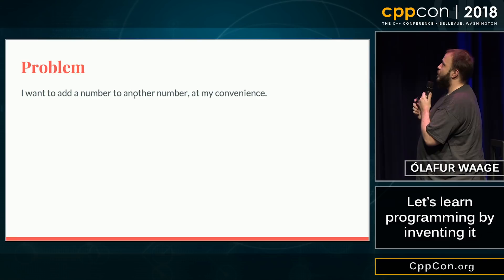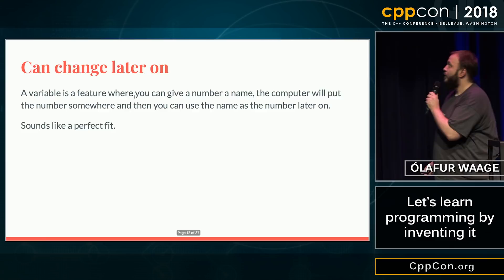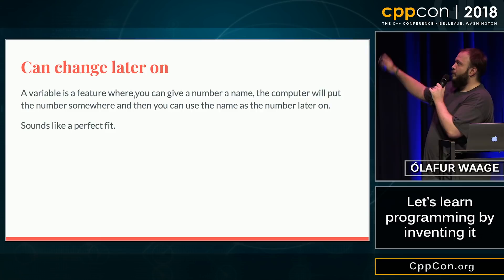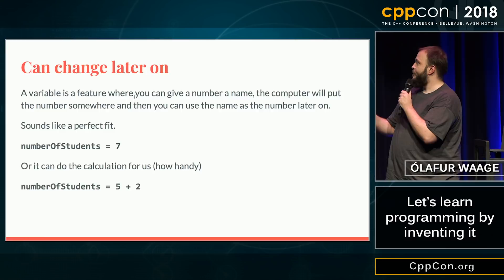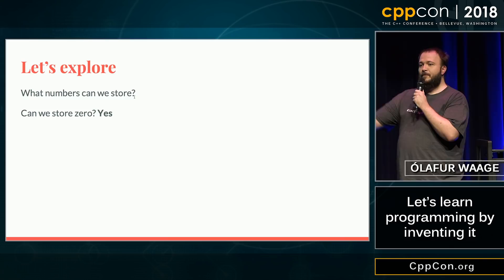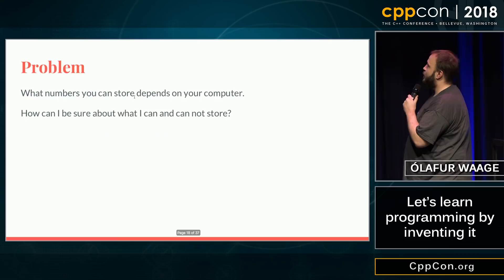So I have a problem: I would like to add a number to any other number at my convenience. Computers have memory — great, it's only for numbers, again great. So let's make the computer do the work for us. A variable is a feature where you can give a number a name and the computer puts it somewhere. So I can have 'number of students' as the representation of seven, or it can even do the calculation for me. Let's explore what numbers we can store: zero, negative numbers, what's the biggest number, is that a number?